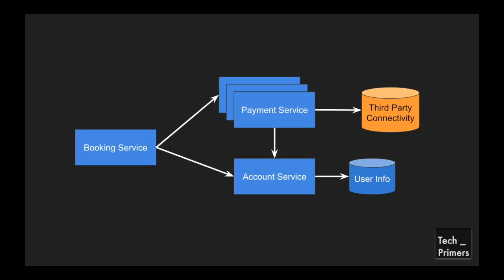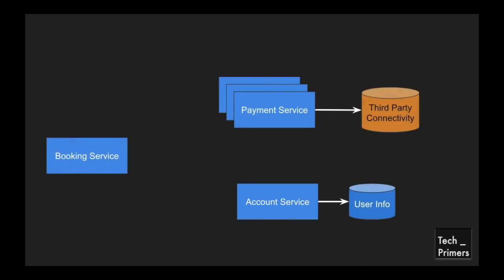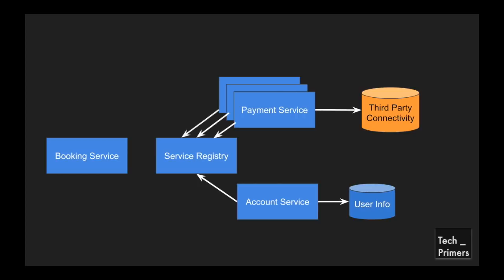In order to make the application more scalable, let's add the service registry design pattern and see the different challenges we encounter. We have the booking service and the payment services — let's add a service registry. If you're not sure about what a service registry is, take a look at my video on service registry, linked in the top right corner. When we have a service registry in our deployment diagram, all services that need to communicate with each other must register with it — the account service, each instance of the payment service, and the booking service all register with the service registry.